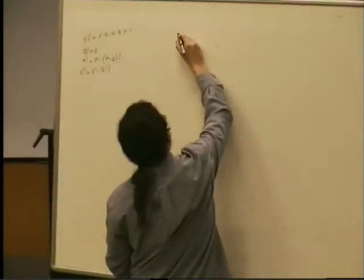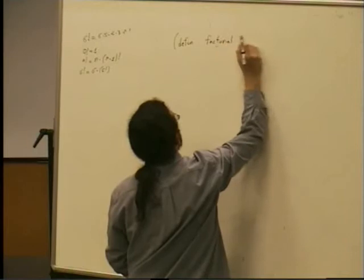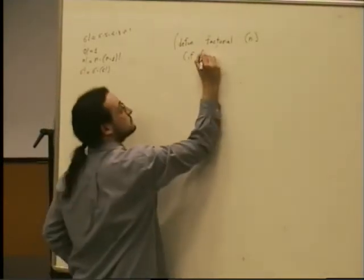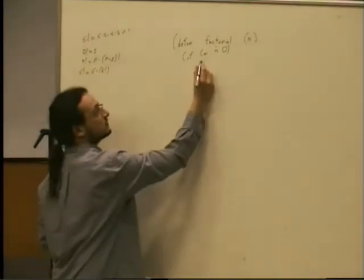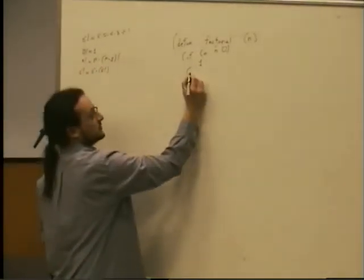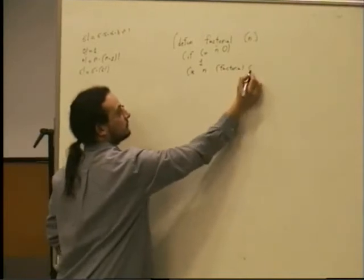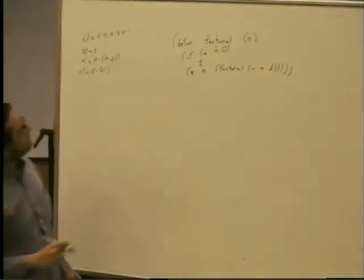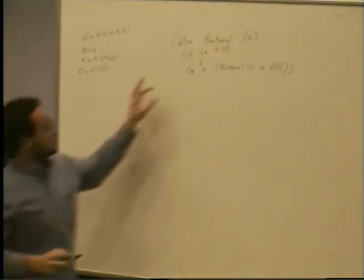We just have to write open, defun, fact or factorial, let's say factorial, open parenthesis n close. If n is 0, then the result is 1. Otherwise, otherwise it is the product of n and the factorial of n minus 1.